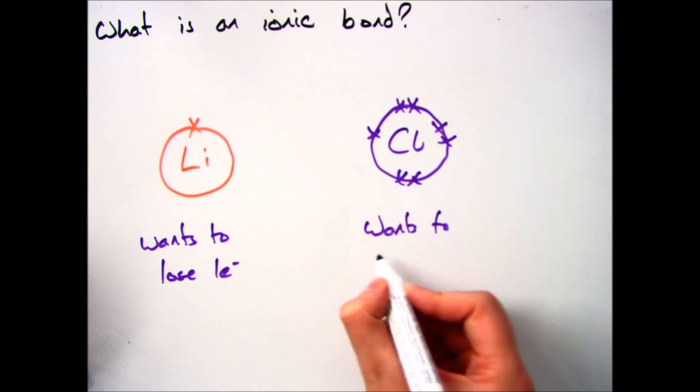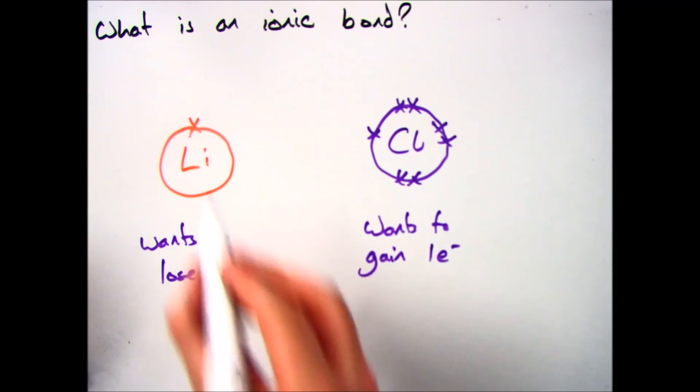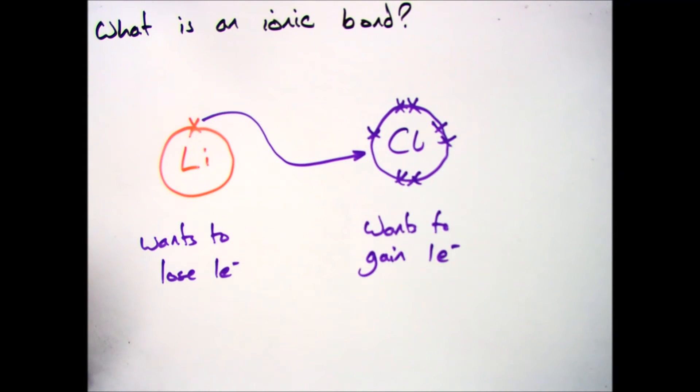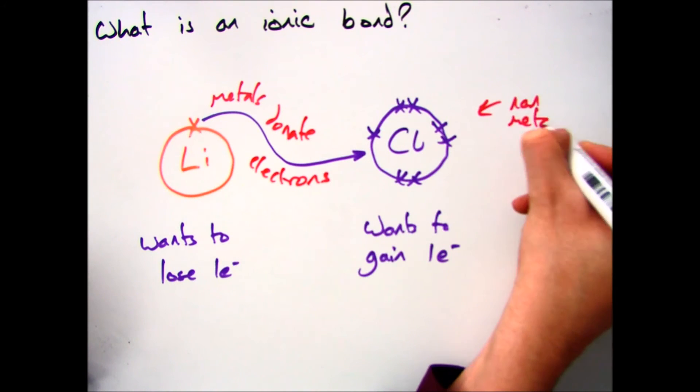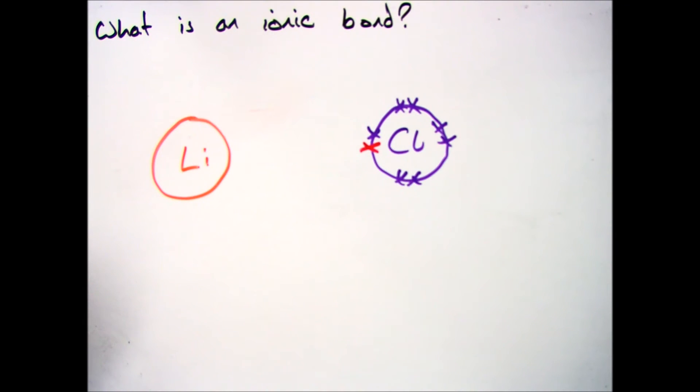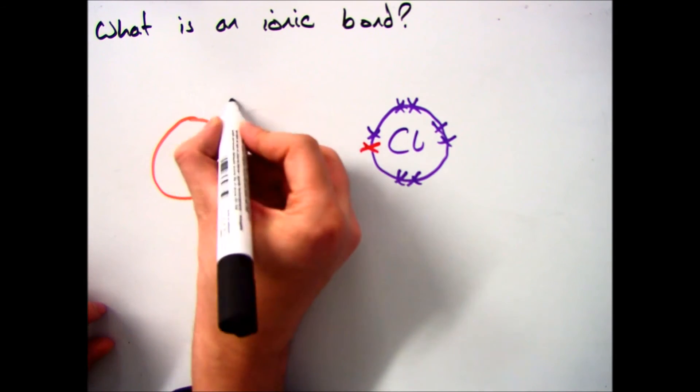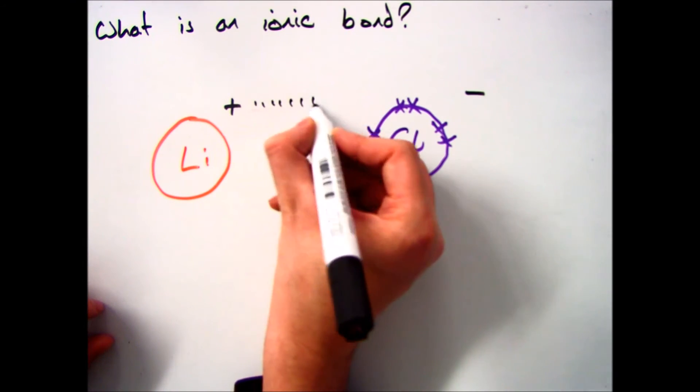We now know that lithium wants to lose an electron, and chlorine wants to gain it. Well, an ionic bond is where the metal donates its electrons to the non-metal. So you should now be able to tell me that the charges, so lithium's a metal, becomes positive, chlorine becomes negative.